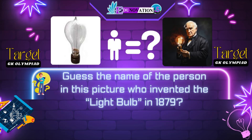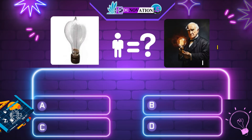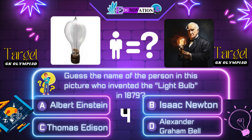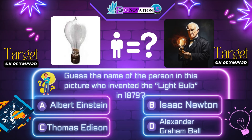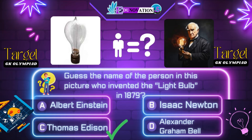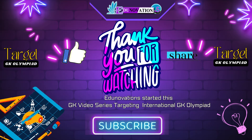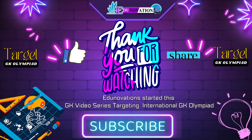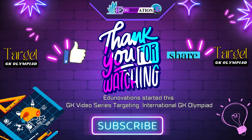Now this is the last question. Guess the name of the person in this picture who invented the light bulb in 1879. Your options are: A. Albert Einstein, B. Isaac Newton, C. Thomas Edison, D. Alexander Graham Bell. Time's up. Correct answer is C. Thomas Edison.